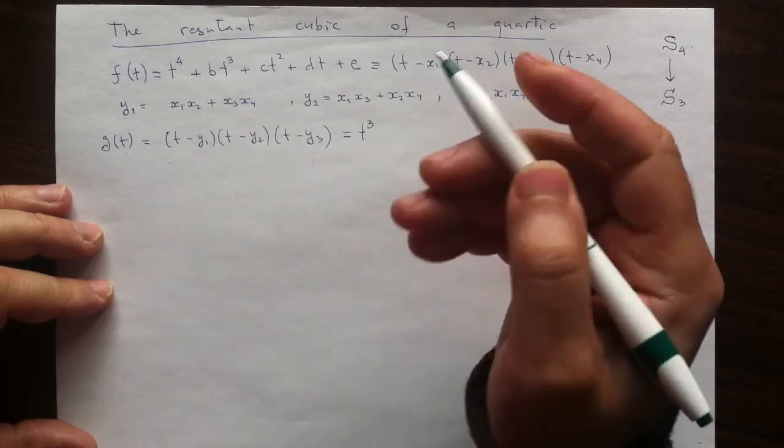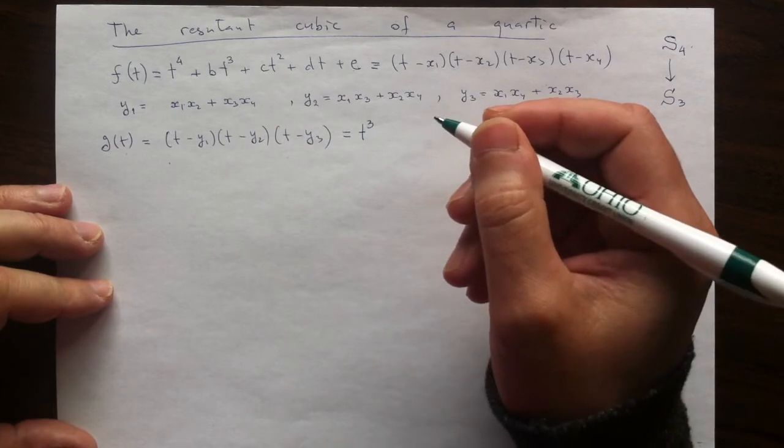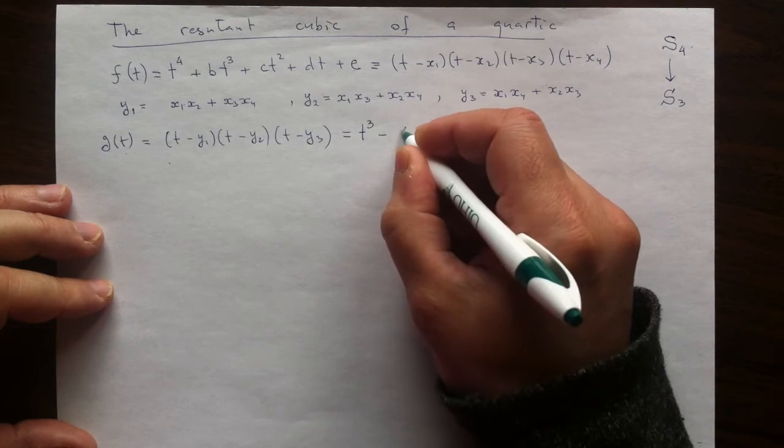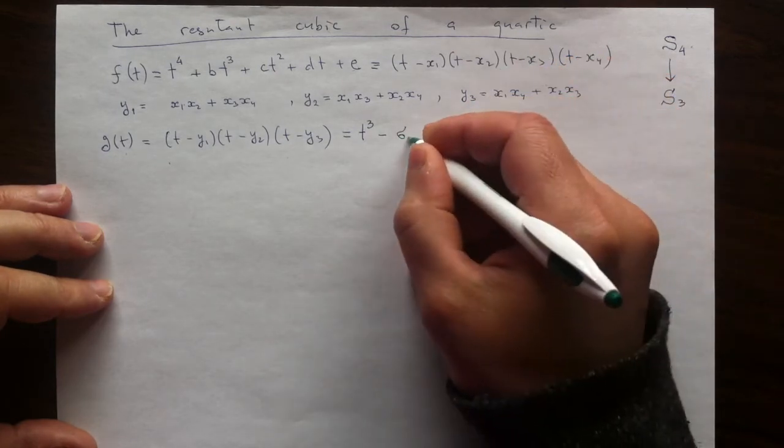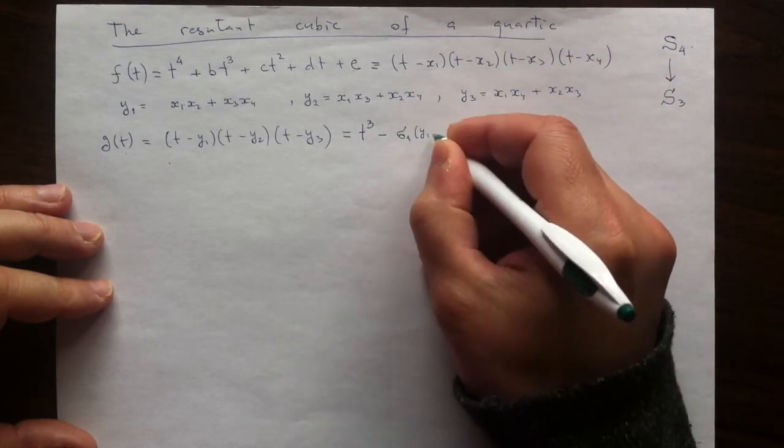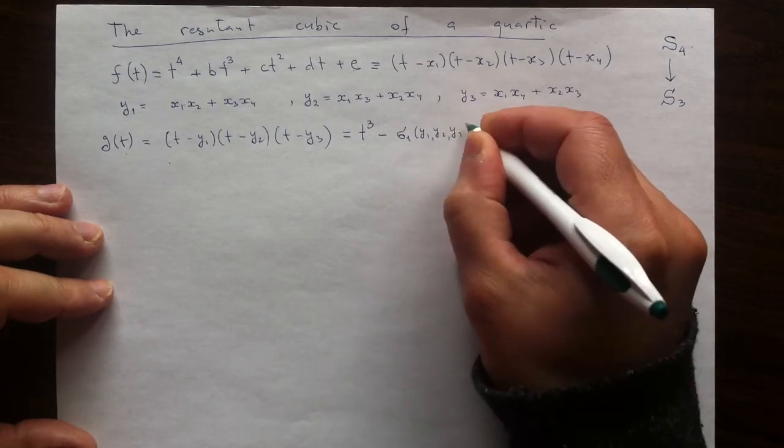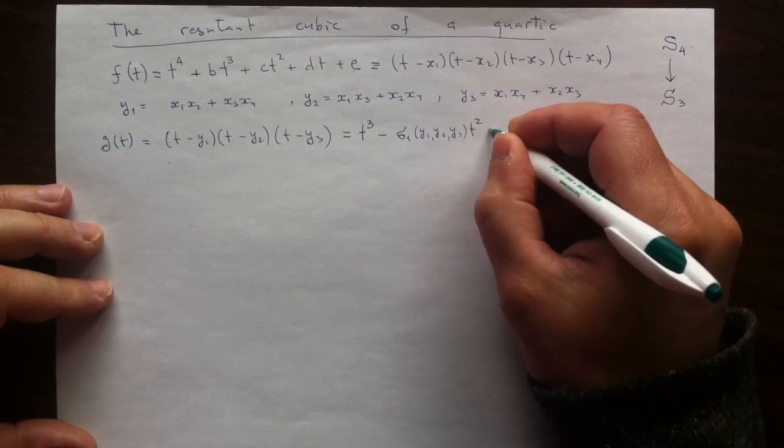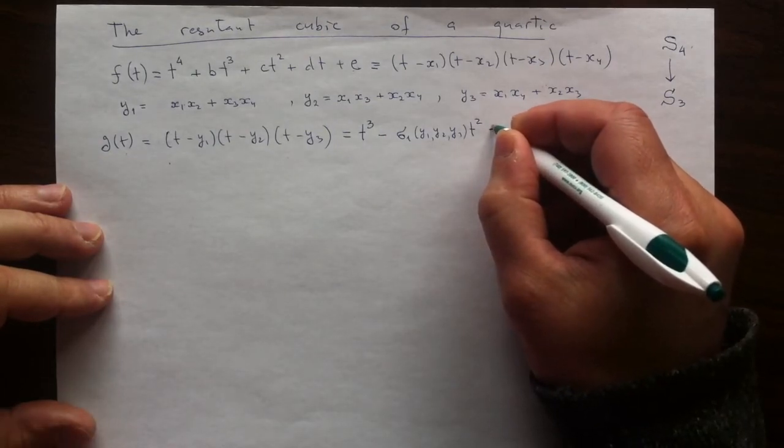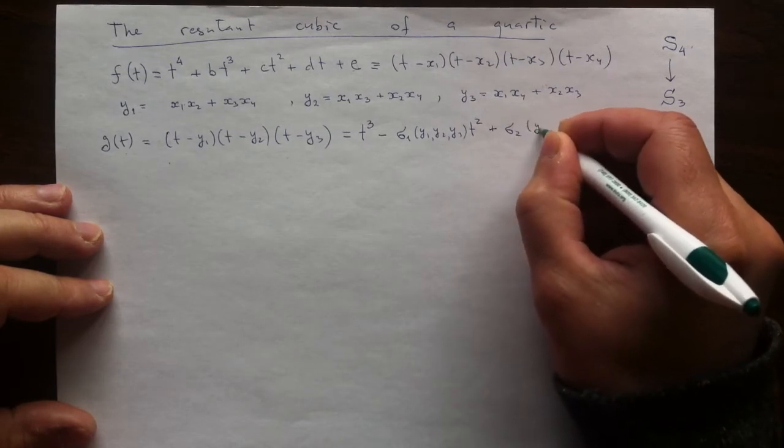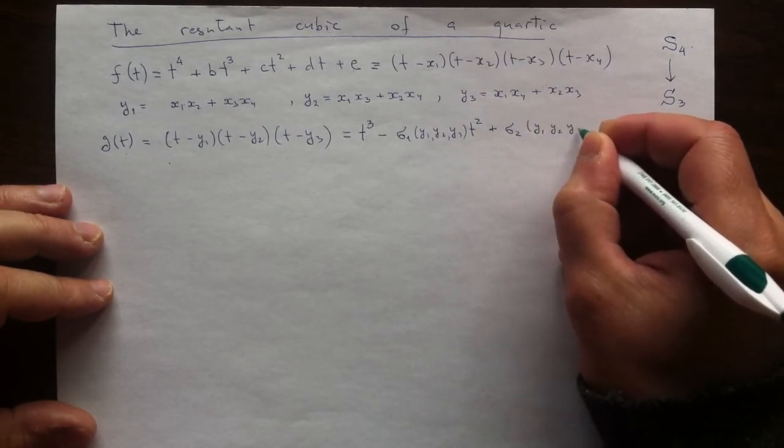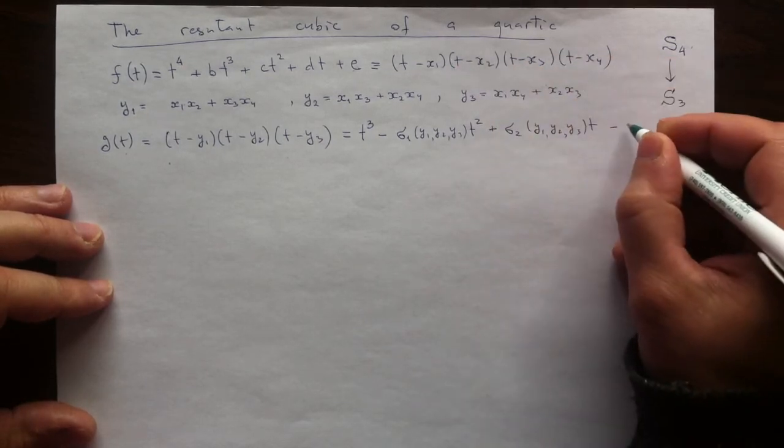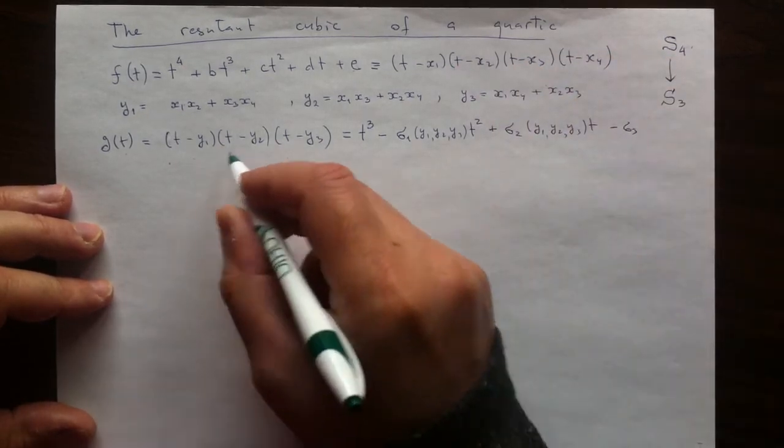The leading coefficient will be t cubed. Then the coefficient for the square will be, by the Vieta formulas, negative σ1 of y's. The coefficient for the linear term will be positive σ2 of y's. And the free term will be negative σ3, negative the product of all the roots.